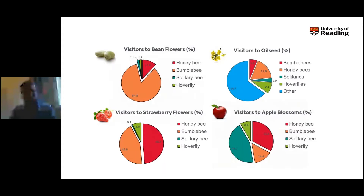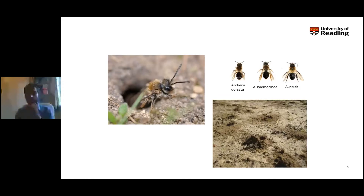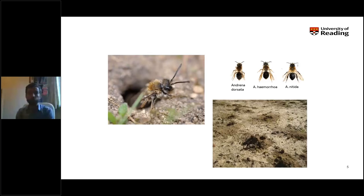Particularly, solitary bees are really abundant and potentially very important for pollinating apples compared to other crops. The wild and solitary bees we predominantly find are andrenid bees — mining bees. There are three species really abundant in UK apple orchards: Andrena dorsata, Haemorrhoa, and Nitida. You've likely seen their nests in bare ground or sandy soil, where they nest in burrows and provision eggs with pollen to reproduce the next generation — making them potentially really important pollinators.